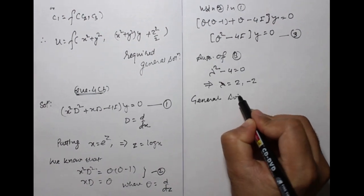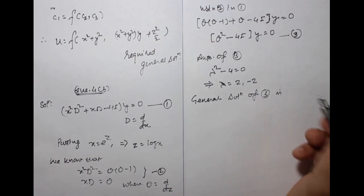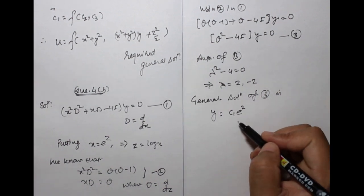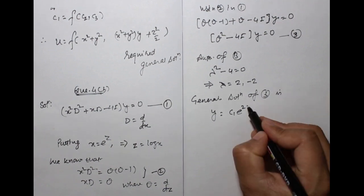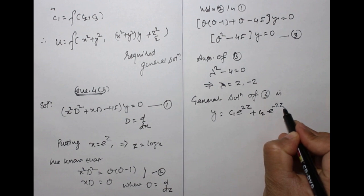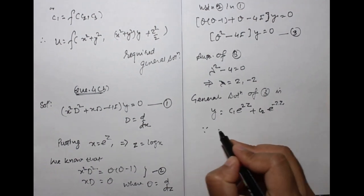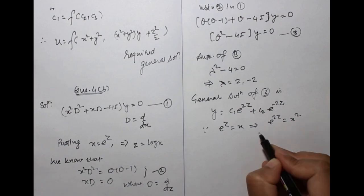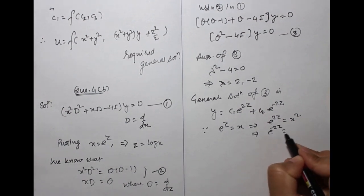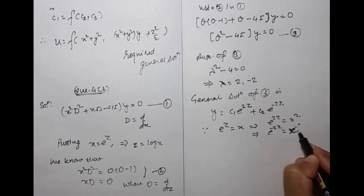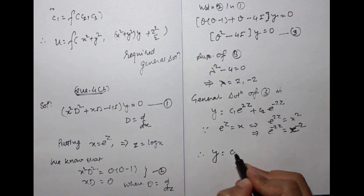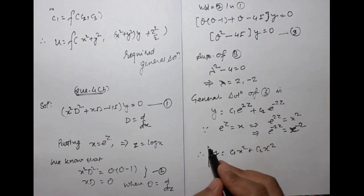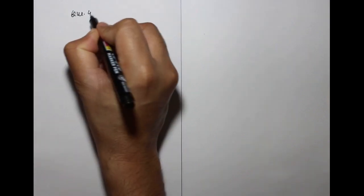The general solution in terms of z is: y = c1·e^(2z) + c2·e^(−2z). Since e^z = x, it follows that e^(2z) = x² and e^(−2z) = x^(−2). Therefore, the general solution is y = c1·x² + c2·x^(−2). This is the required general solution. Question 4c.